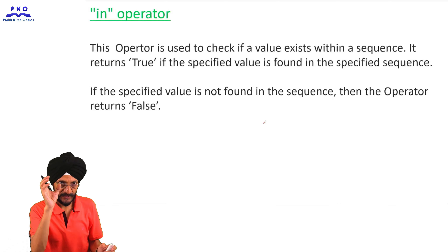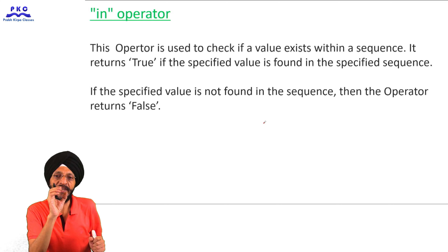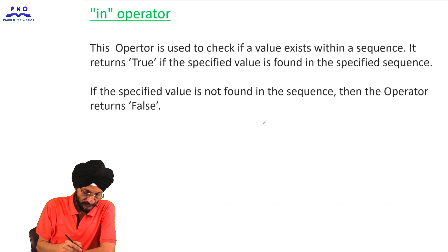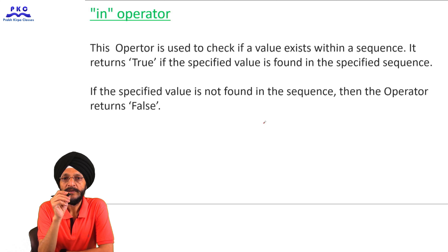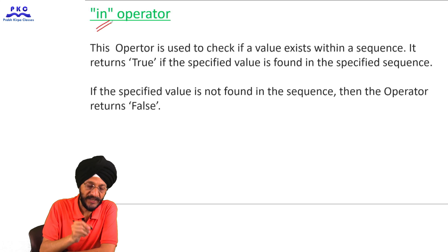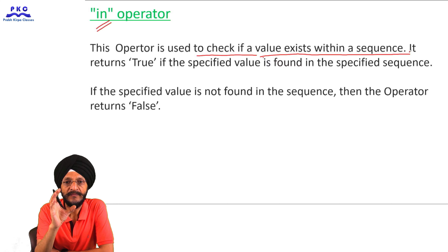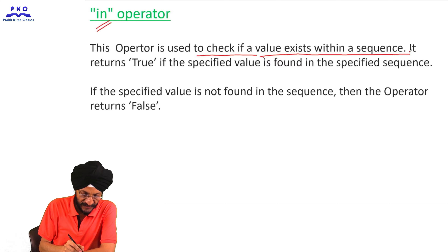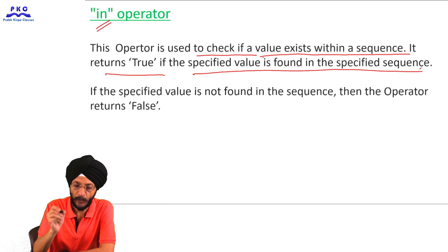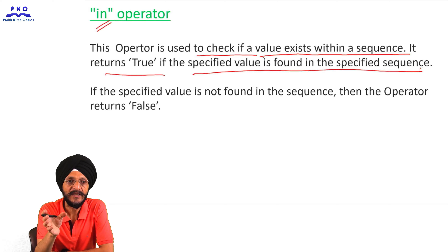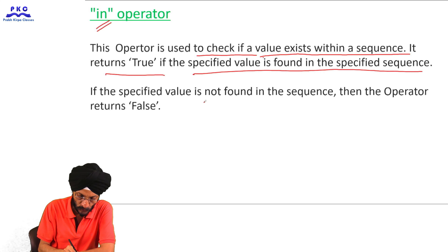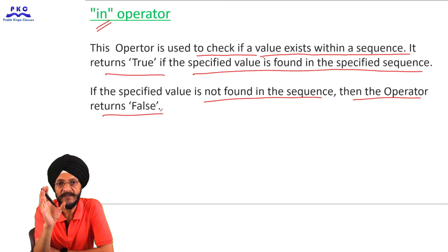The 'in' membership operator is used to check if a value exists within a sequence. It returns true if the specified value is found in the sequence. If the specified value is not found in the sequence, the 'in' operator returns false.